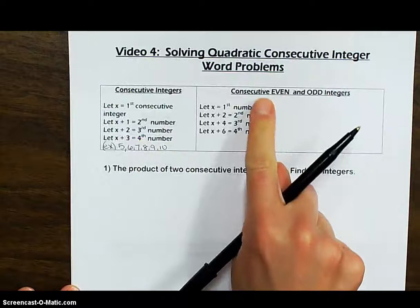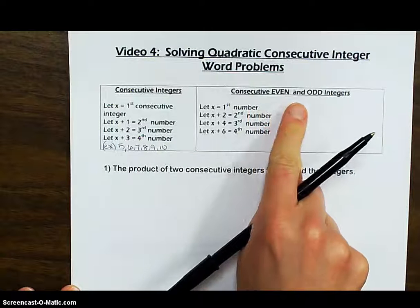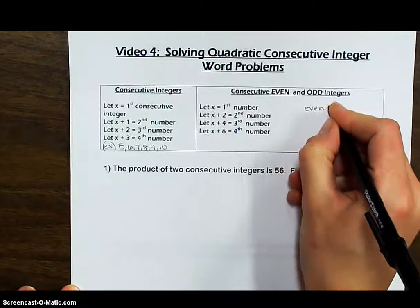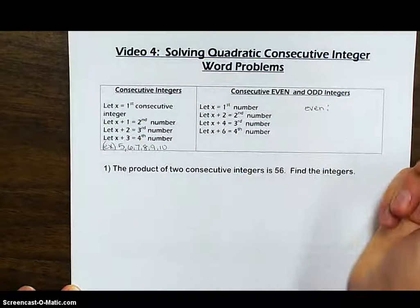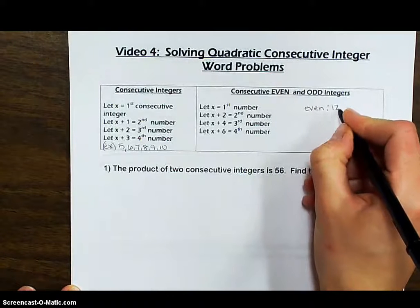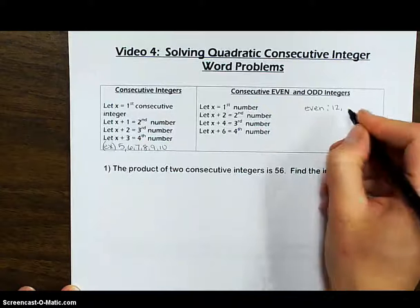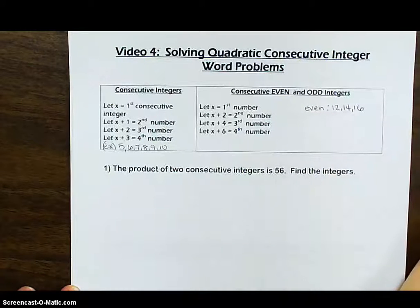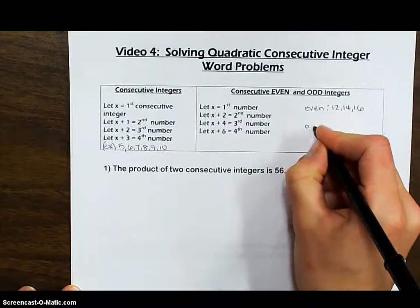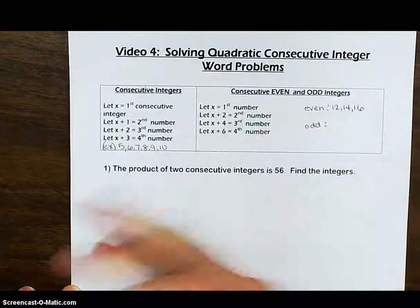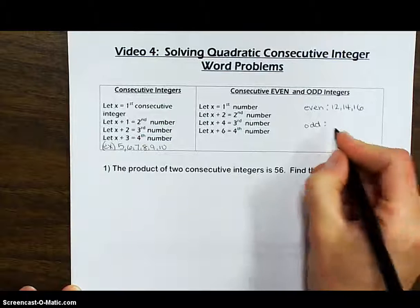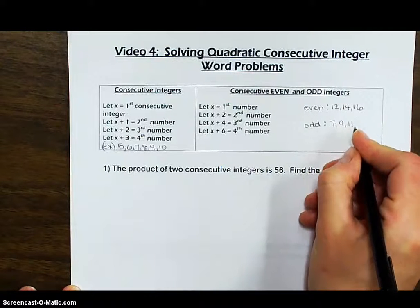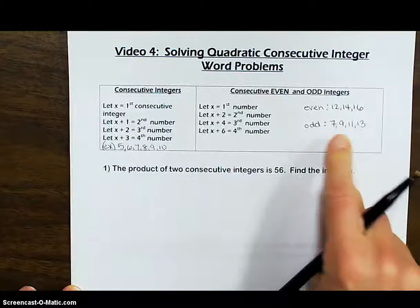We could also have consecutive even and consecutive odd integers. For consecutive even integers, you pick an even number — say 12 — and the next even integers would be 14 and 16. For consecutive odd numbers, pick any odd number, say seven — the next odd numbers would be nine, eleven, thirteen. Those would be consecutive.